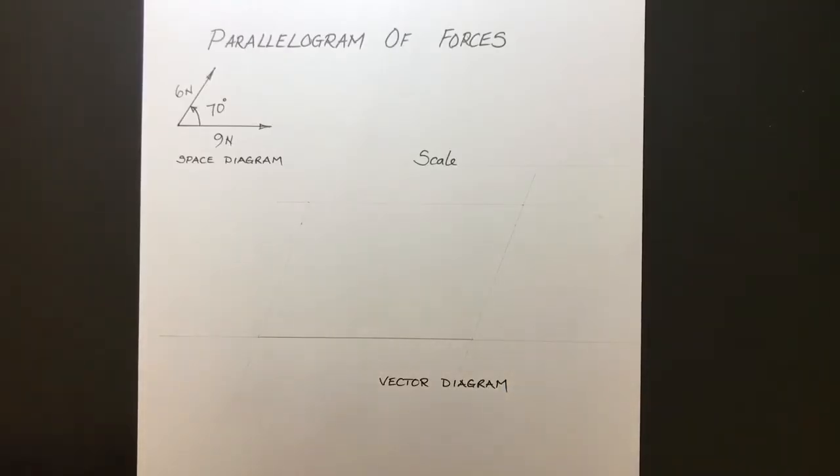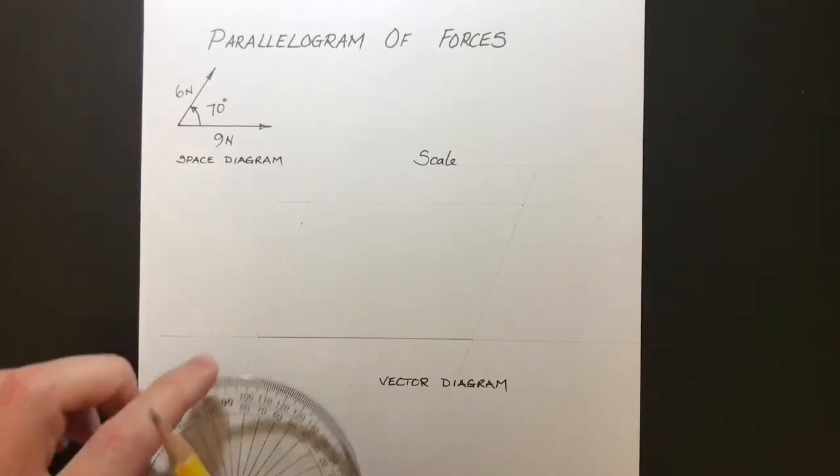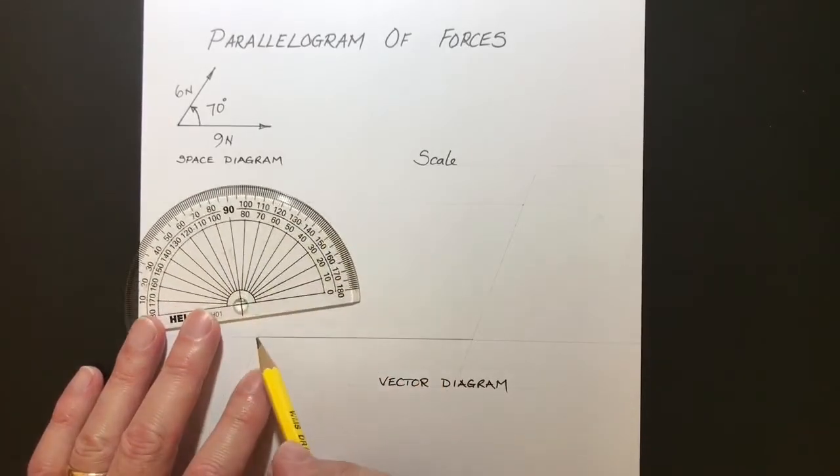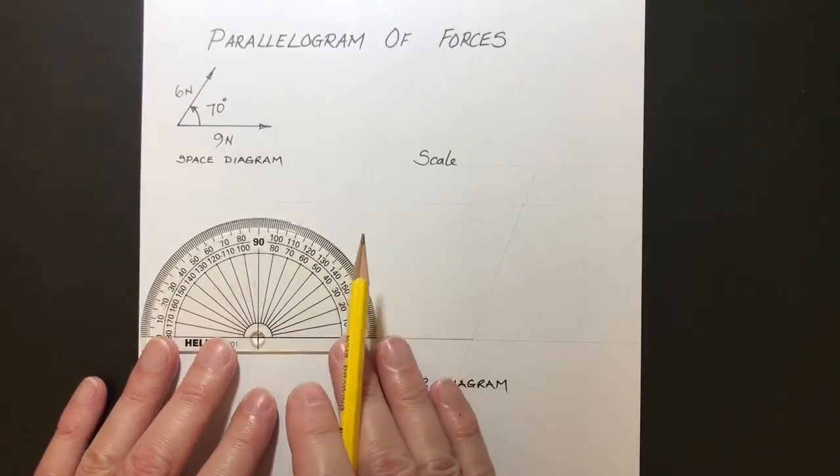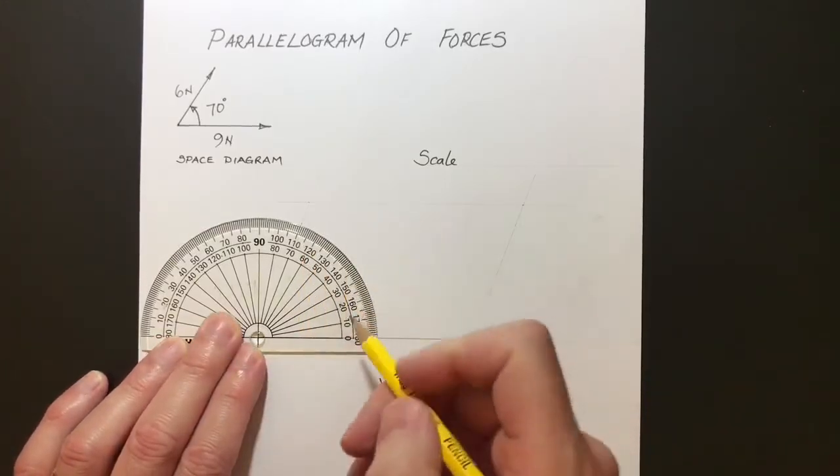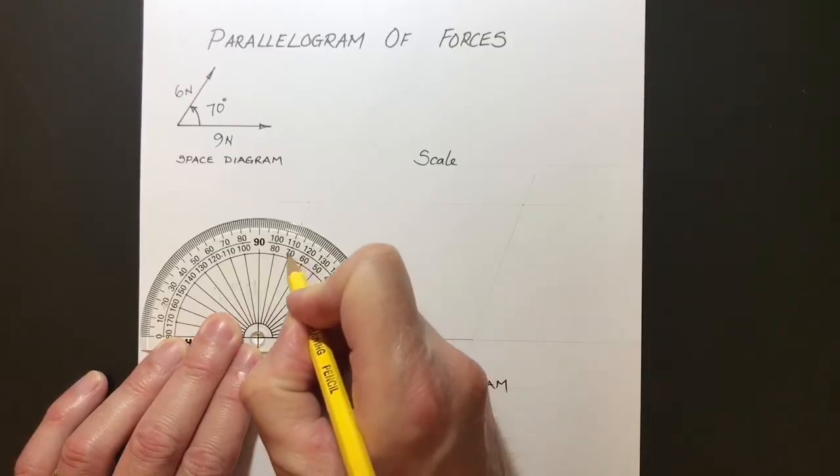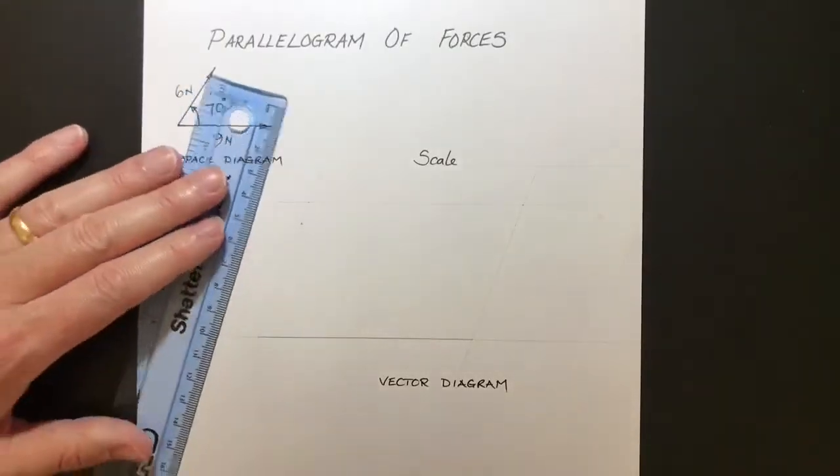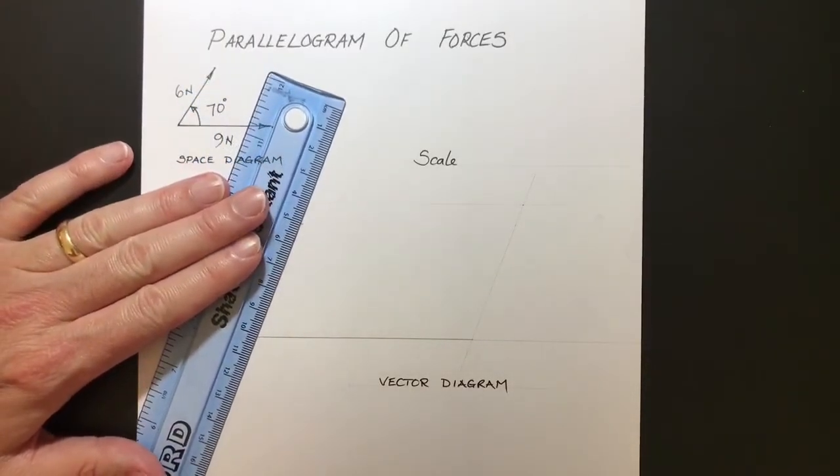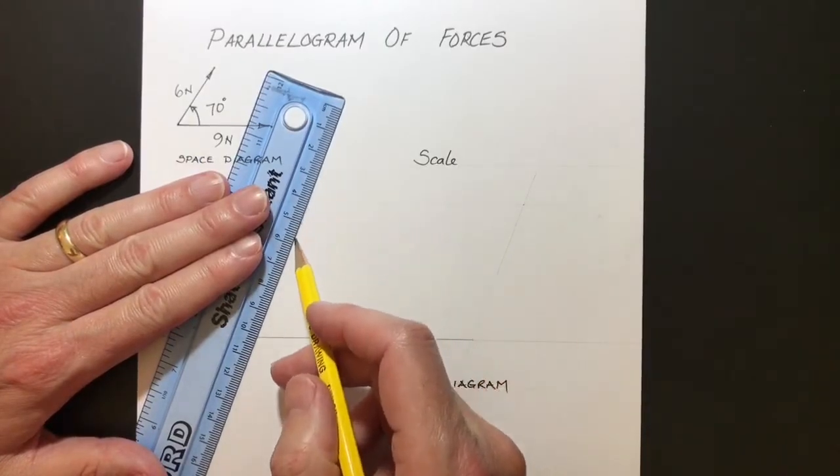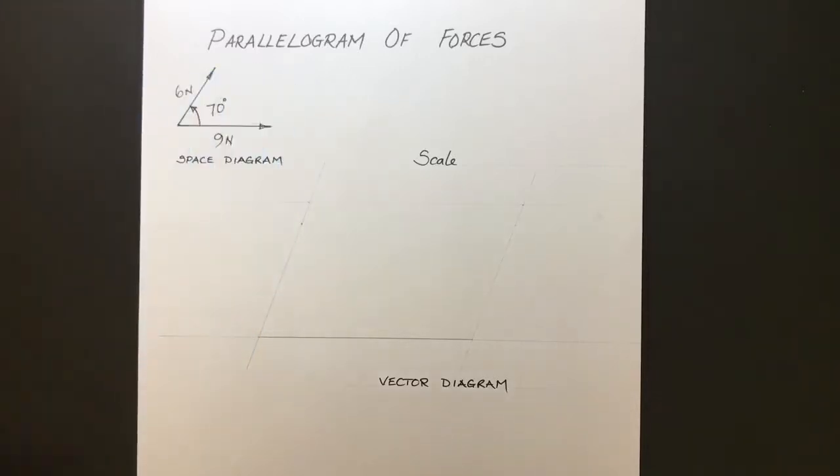Now our second vector is six Newtons. Six Newtons acts at 70 degrees. So take the protractor, put the crosshairs on the end of the vector there. Carefully line that up. And then go round to 70 degrees here and out and place a mark there. And then we can draw a faint line. Draw a faint line first just to show the direction. And there's our faint line.